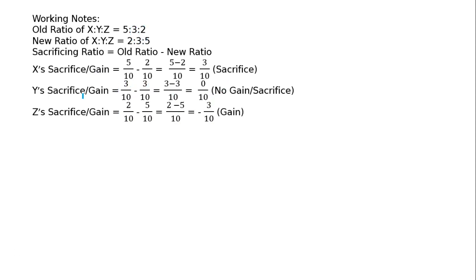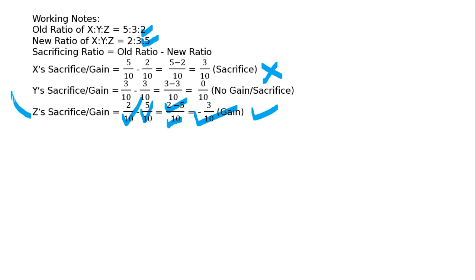For Z's sacrifice or gain: old ratio is 2/10 and new ratio is 5/10. So 2/10 minus 5/10 equals minus 3/10 — that is a gain. So here, X is sacrificing and Z is gaining. Therefore Z's capital account is debited to X's capital account.